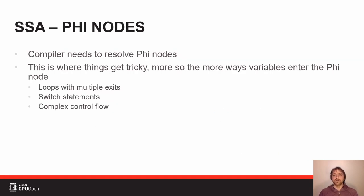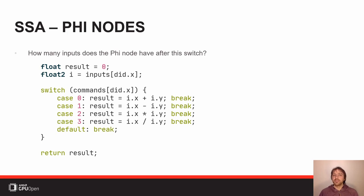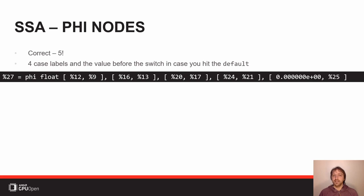Translating a program into SSA form gets difficult, especially when loops, nested if statements, or other complex control flow is involved. Let's look at one example — a switch statement with multiple different assignments to the result variable. If we were to translate that into SSA form, we obviously need a phi node at the bottom where the return statement is. How many inputs is that phi node going to have? The answer is five: one for each of the four case labels in the switch statement, plus the case where we take the default path and the initial zero value survives.